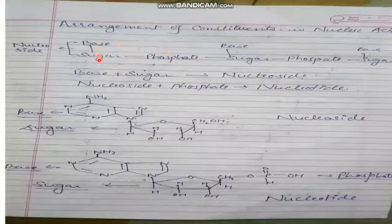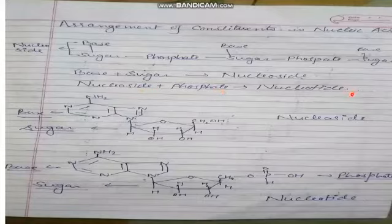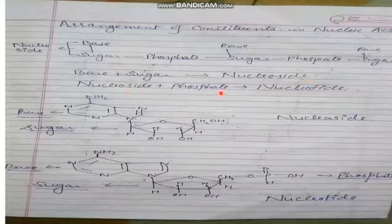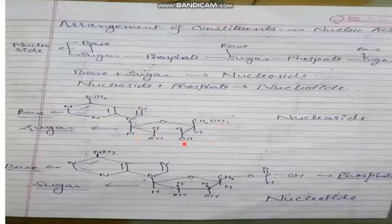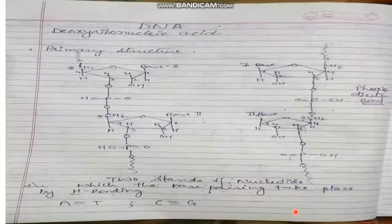When a base combines with a sugar, it is known as a nucleoside. When a nucleoside combines with a phosphate group — that is, base plus sugar plus phosphate — all three components together form a nucleotide. So a nucleoside is base plus sugar, and a nucleotide is nucleoside plus phosphate. In the example shown, the base is arranged with ribose sugar to form a nucleoside, and when the CH₂OH combines with a phosphate group, it forms a nucleotide.